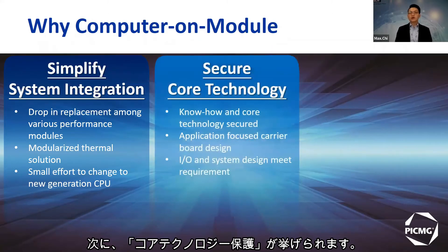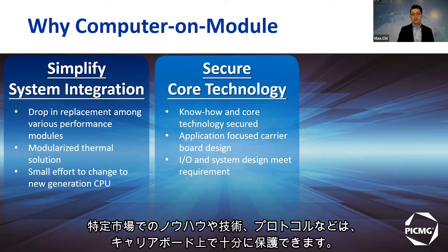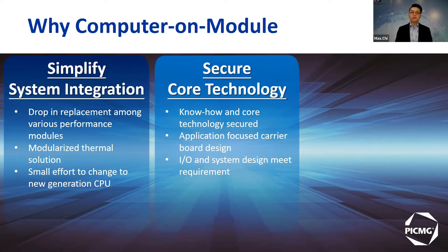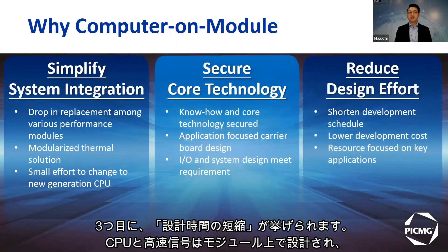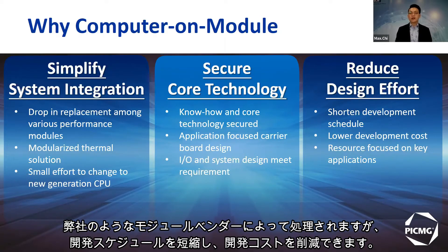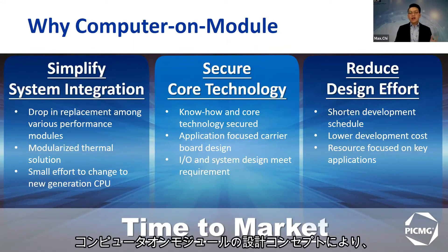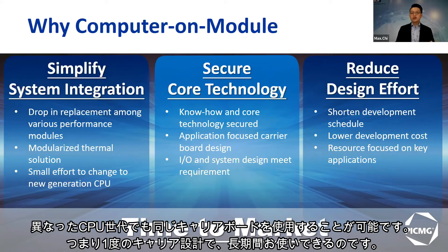Second, it secures core technology. Specific market know-how, technology, and protocol can be well secured on your carrier, and you can simply focus on your carrier board design to meet I/O and system requirements of your market. Third, it reduces design effort. While the CPU and high-speed signals are designed on the module and taken care of by module vendors, you can shorten development schedule and lower development costs. The most important thing is time to market — one-time carrier design lasts for a longer period.